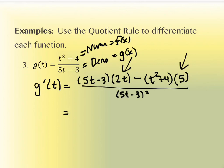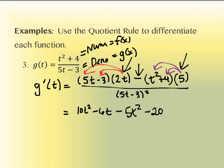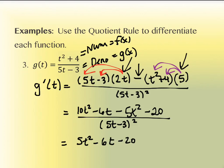So I need to distribute (5t − 3) times 2t: 5t × 2t = 10t², and −3 × 2t = −6t. On the other side, distributing the negative with 5 × t² gives −5t², and 5 × 4 gives −20. Then combining like terms on top: 10t² − 5t² = 5t², and we keep −6t and −20. So the numerator simplifies to 5t² − 6t − 20.